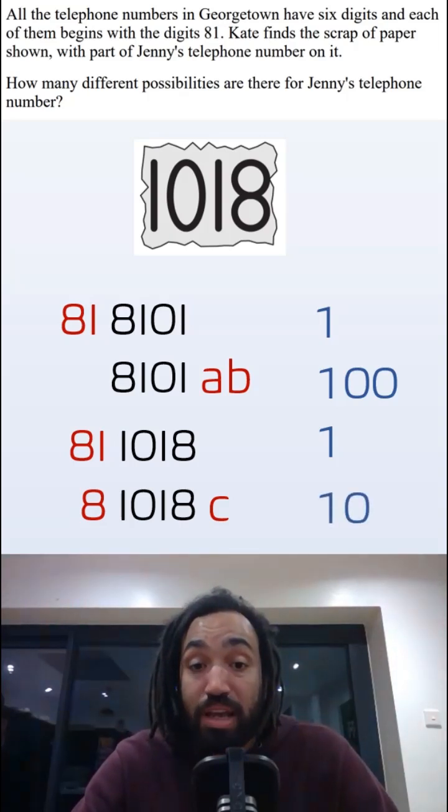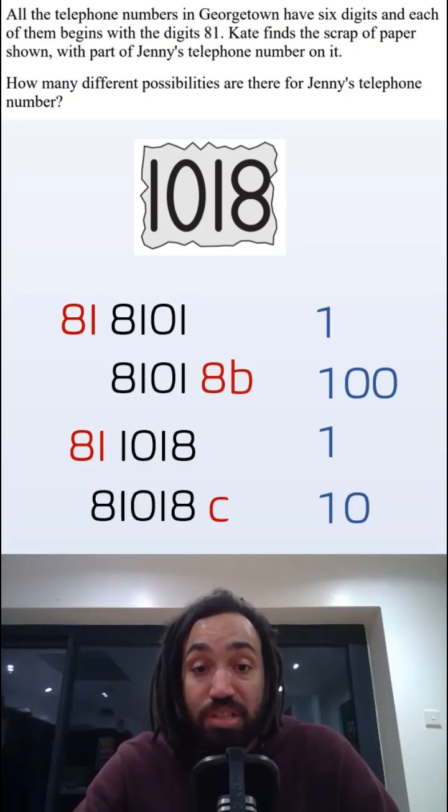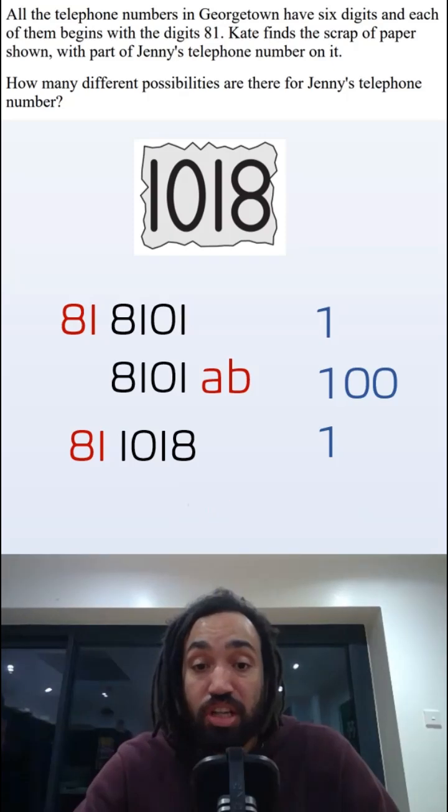But we're going to run into a problem here because in fact this is exactly the same as when A was 8 and therefore we've already counted these ones twice so those can go in the bin. So our final solution is 102.